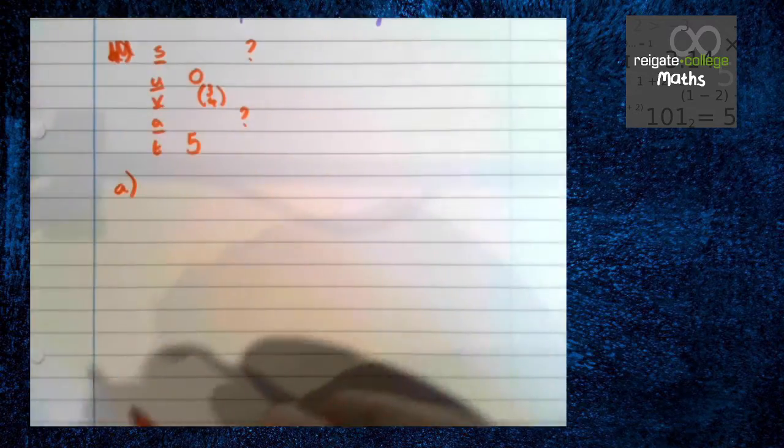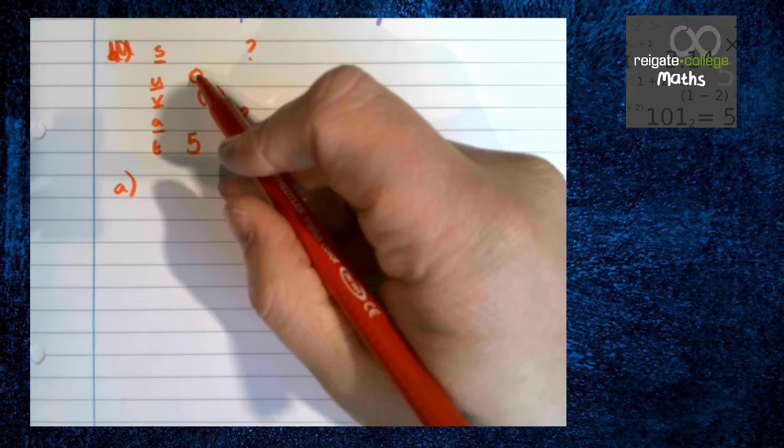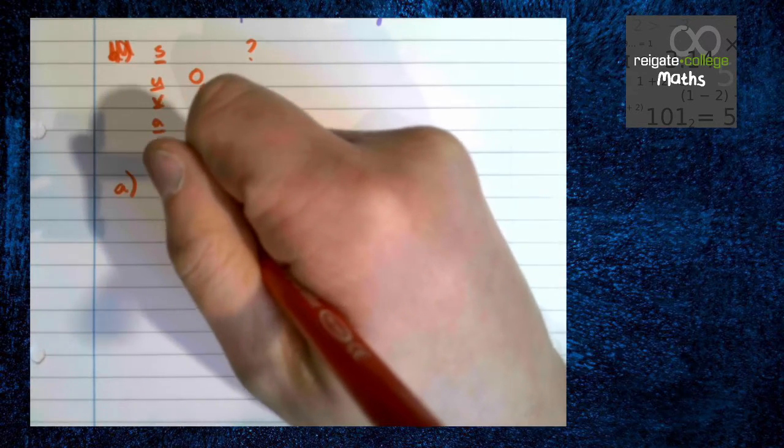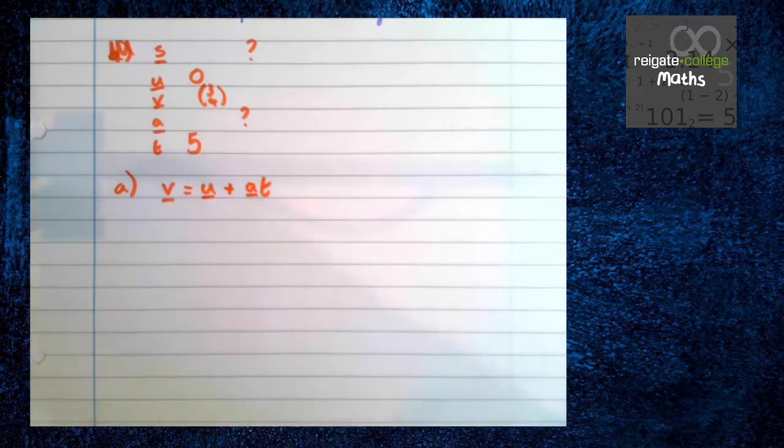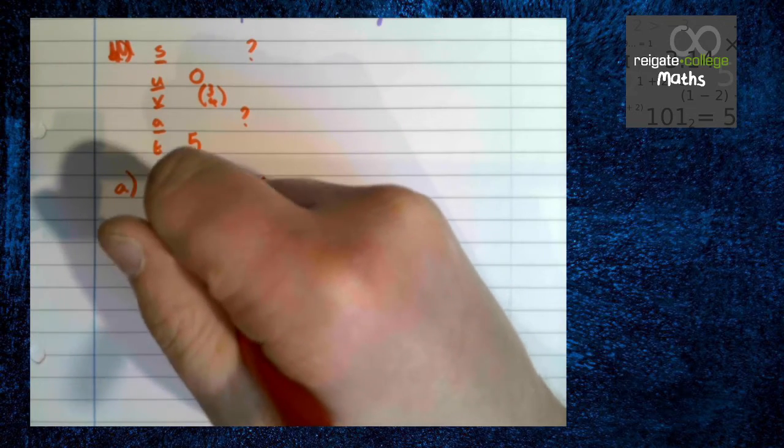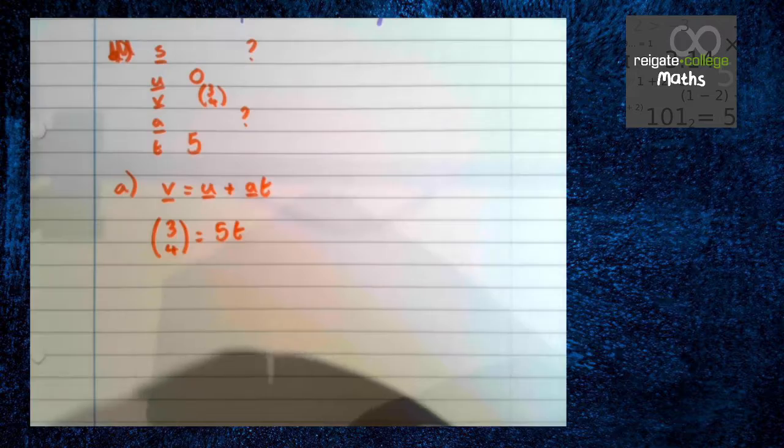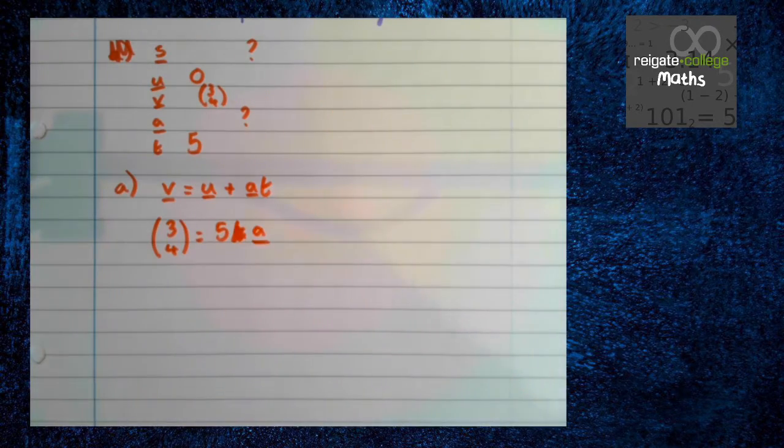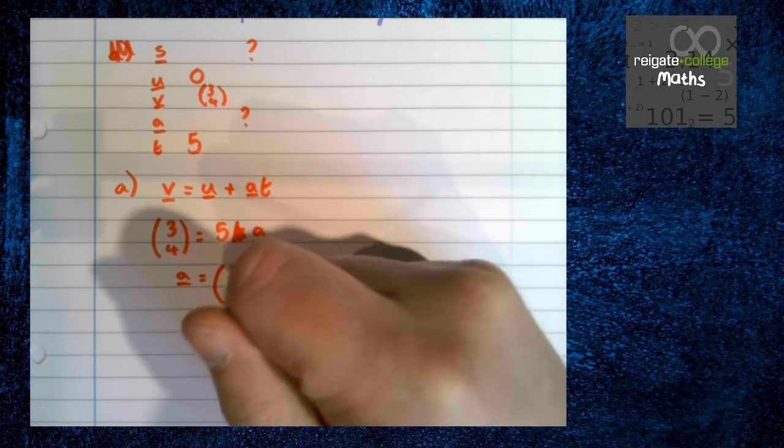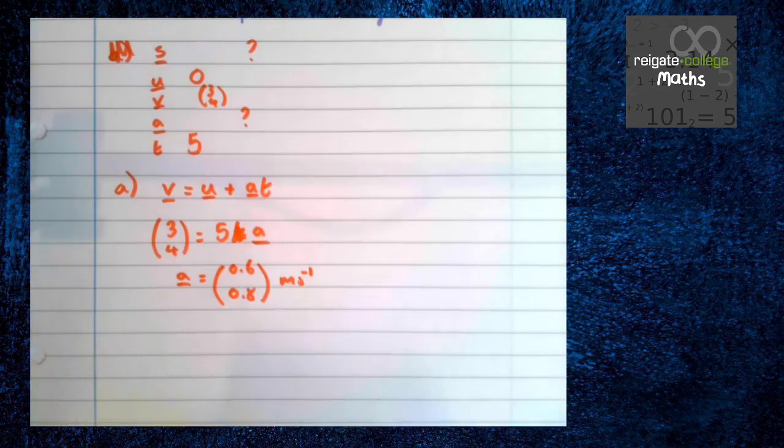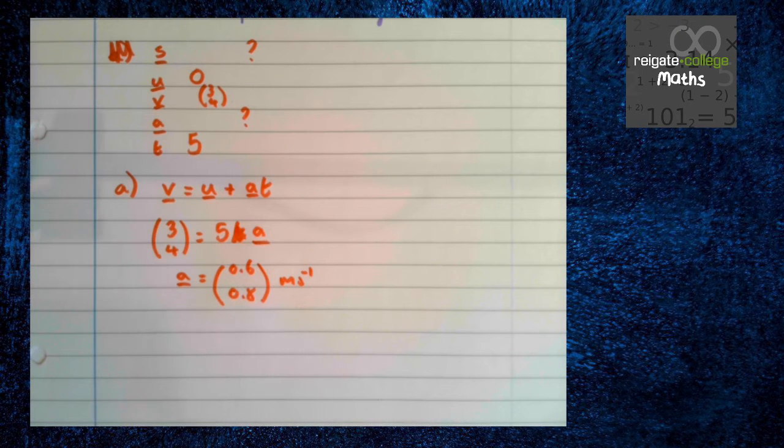So part a, I'm actually going to put part a down here. We're trying to find the acceleration. We have v, u, and t. So again we use v equals u plus at. We have this is 3, 4, u is 0. So we've got 5a, the acceleration. So a is 3 over 5, 4 over 5 meters per second squared. Now we're told to find the acceleration. This is the acceleration. We're not told to find the magnitude, so we don't go any further than this.